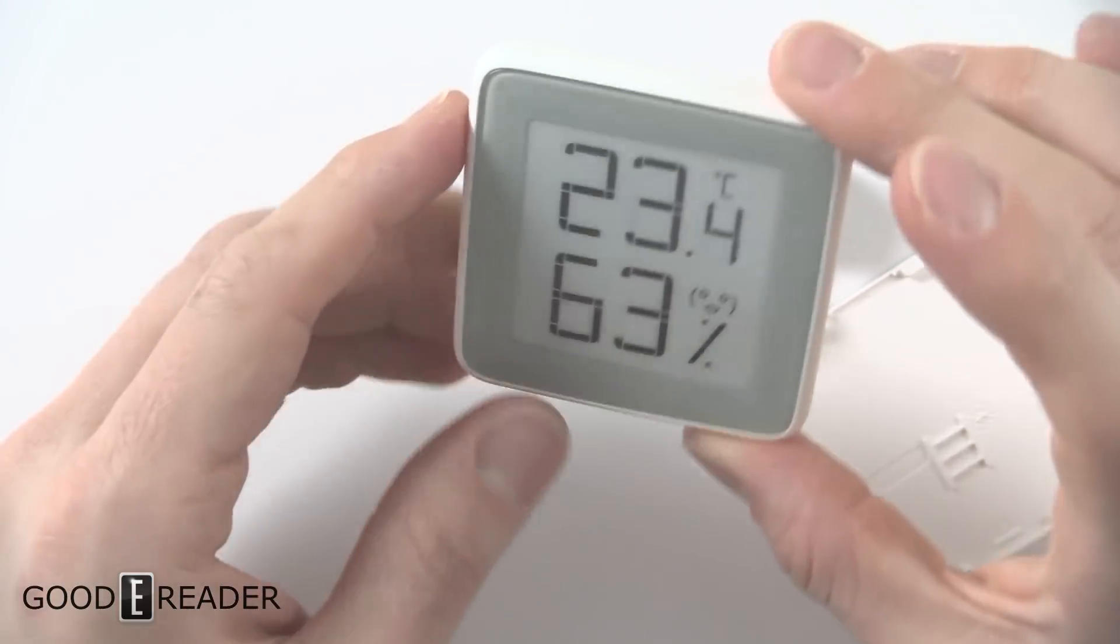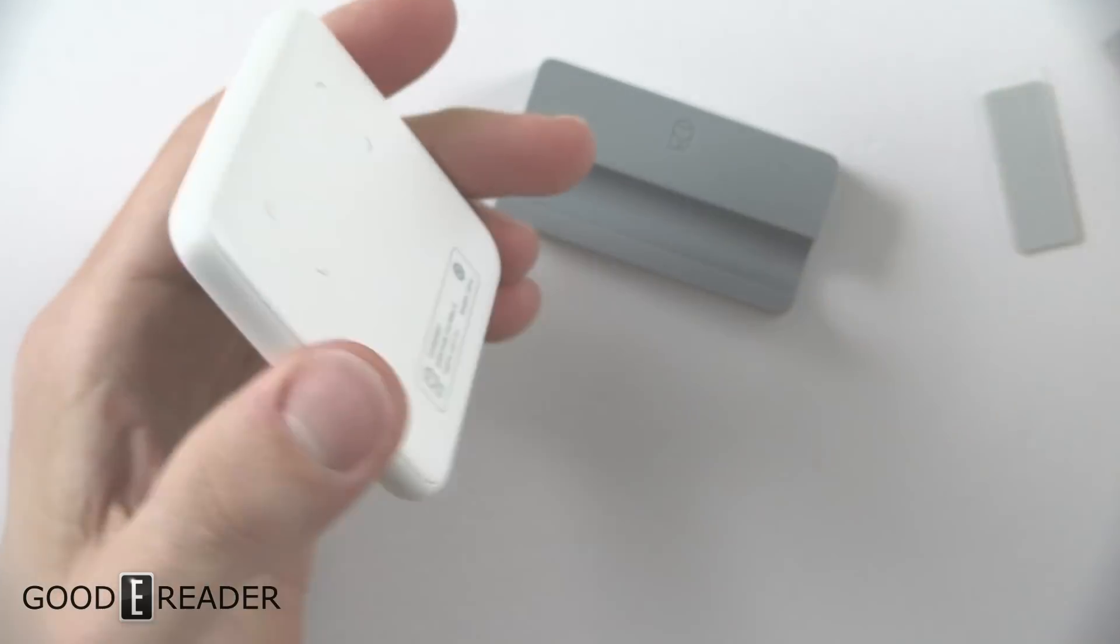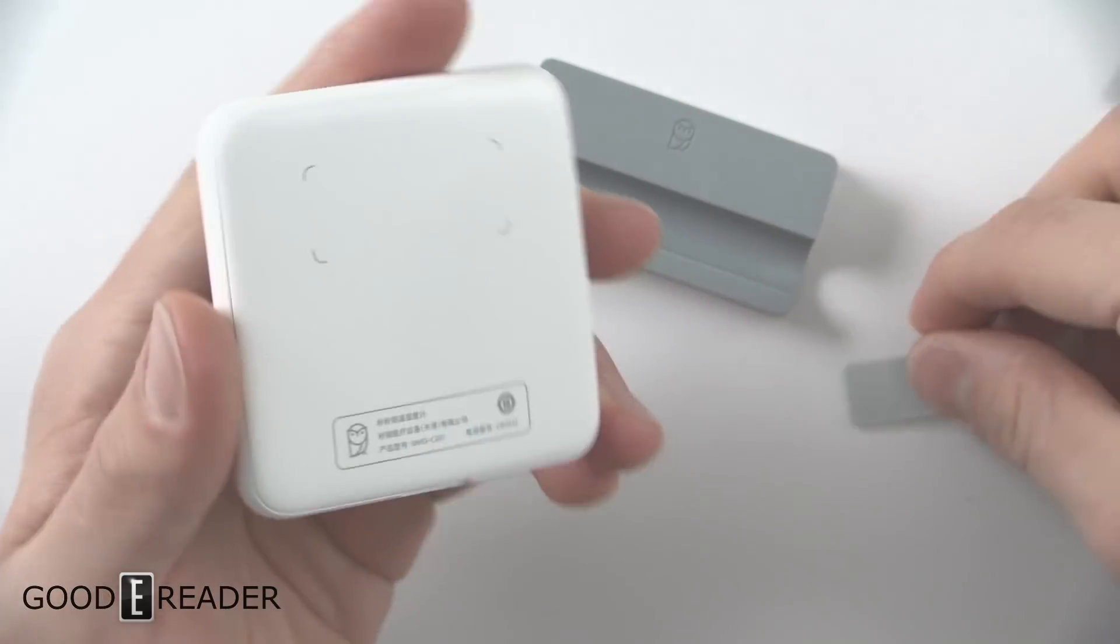You can put the back panel back on. As I showed you before, you have a double-sided tape to stick onto a wall or painted surface and then a magnetic side.